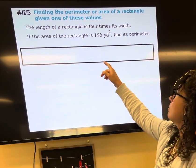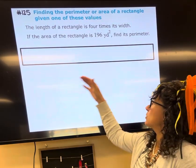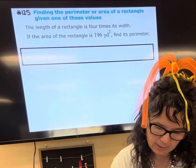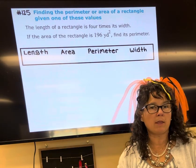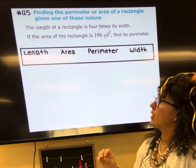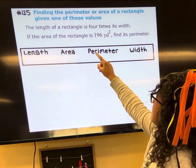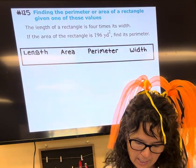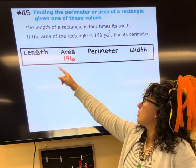When approaching a story problem, you want to start by defining your variables. As we read through this, some of the things that come up are length, area, perimeter, and width. Three of these we don't know because it tells me that the area is 196. So ultimately we have three things we don't know.